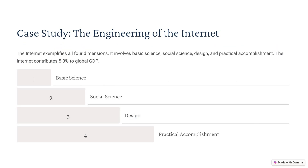The internet is a perfect case study illustrating all four dimensions of engineering. Basic sciences: the internet relies on networking protocols, electrical circuits, and data transmission theories. Social sciences: the internet has transformed communication, economics, and global interactions. Design: user-friendly web interfaces and secure data management are crucial. Practical accomplishment: the internet is a real-world infrastructure contributing 5.3% to global GDP. This case study highlights how multiple dimensions must work together to create impactful technologies.